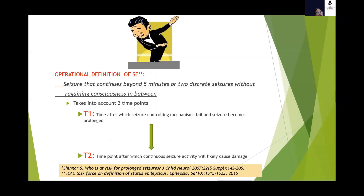This is the reason why the International League Against Epilepsy (ILAE) came up with the operational definition of status epilepticus: a seizure that continues more than five minutes, or two discrete seizures without regaining consciousness in between. It accounts for two time points: T1 is the five-minute point after which the seizure is likely to continue by itself without stopping; T2 is the 30-minute arbitrary time point at which neuronal damage will occur. What we want is to abort the seizure somewhere between T1 and T2 — we never want to reach T2.